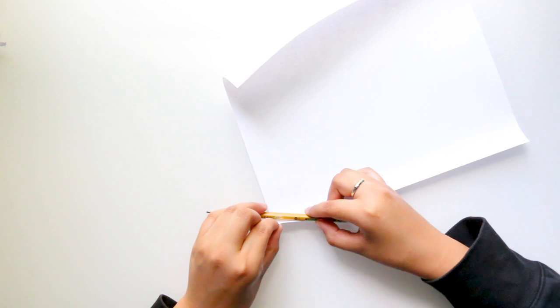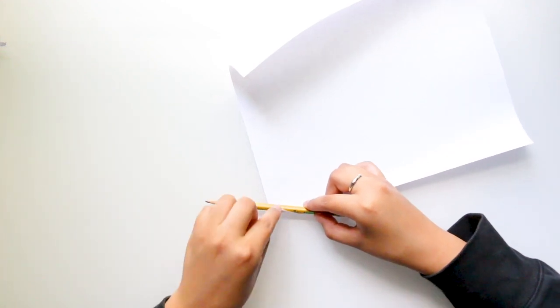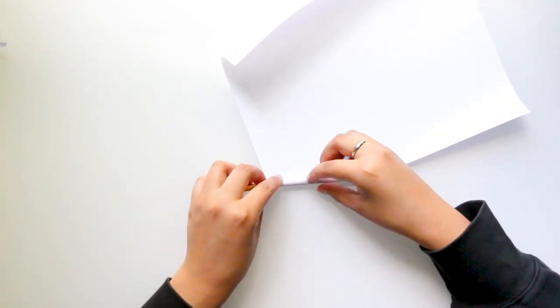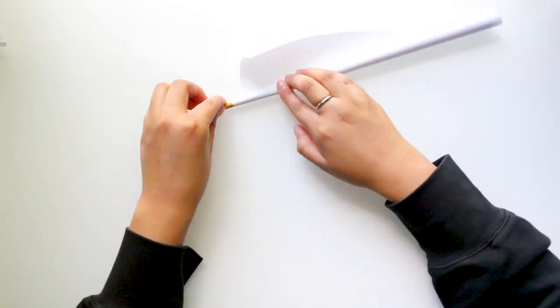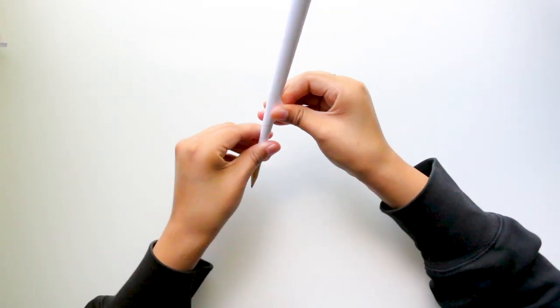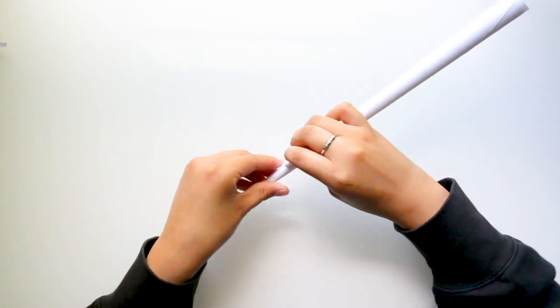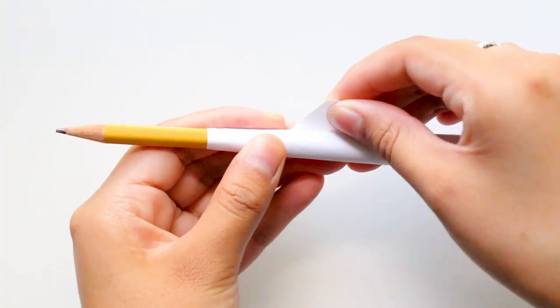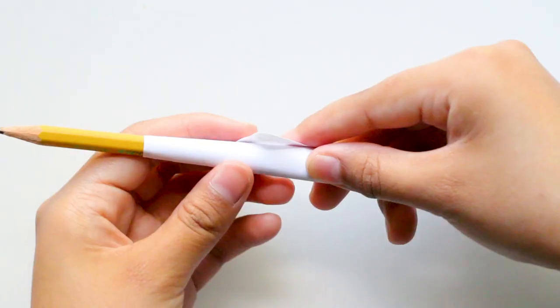Once you're ready to make it permanent, add some hot glue onto the center of the pencil and roll it in the paper. Pull the paper tightly to make sure it's securely wrapped around the pencil, then add a drop of hot glue and glue it down.